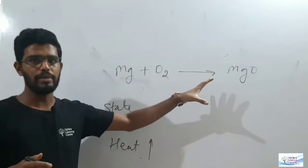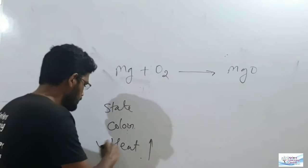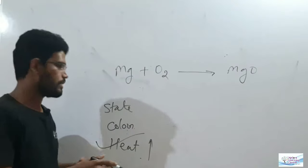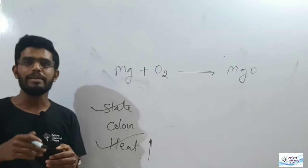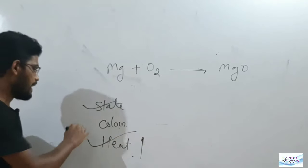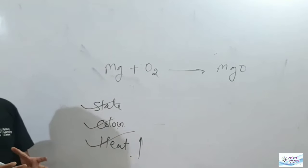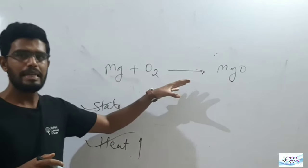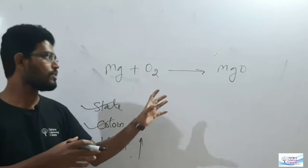The state of compound may change from one kind of state into another type of state, and sometimes color may also change in a chemical reaction. This is the demonstration to show you some characteristics of chemical reaction.